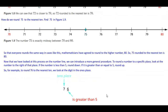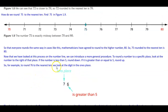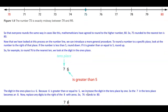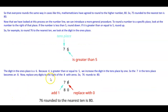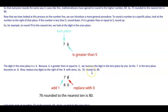For example, to round 76 to the nearest 10, we look at the digit in the ones place. 7 is in the tens place, and 6 is the digit to its right. Since 6 is greater than or equal to 5, we increase the digit in the tens place by 1. The 7 in the tens place becomes an 8, and we replace any digits to the right of 8 with zeros. Therefore, 76 rounds to 80.